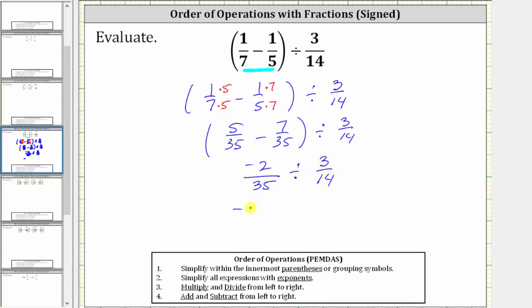So let's write this as -2/35 times the reciprocal of 3/14, which again is 14/3.